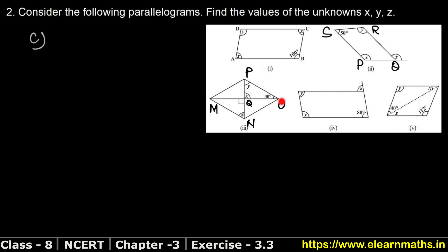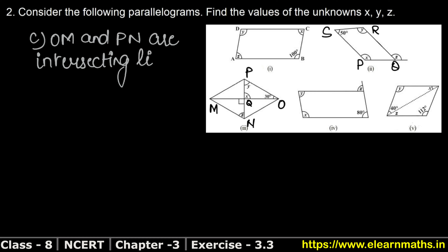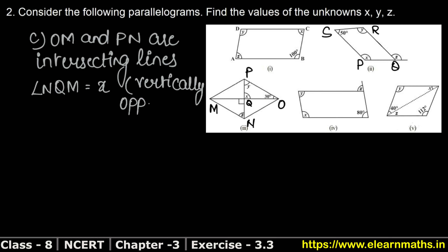Now see this line MO and PN are intersecting — these are the diagonals and they are intersecting lines. So the angle NQM equals angle MQN, which is equal to x. Why? Because vertically opposite angles are equal. Vertically opposite angles are equal.